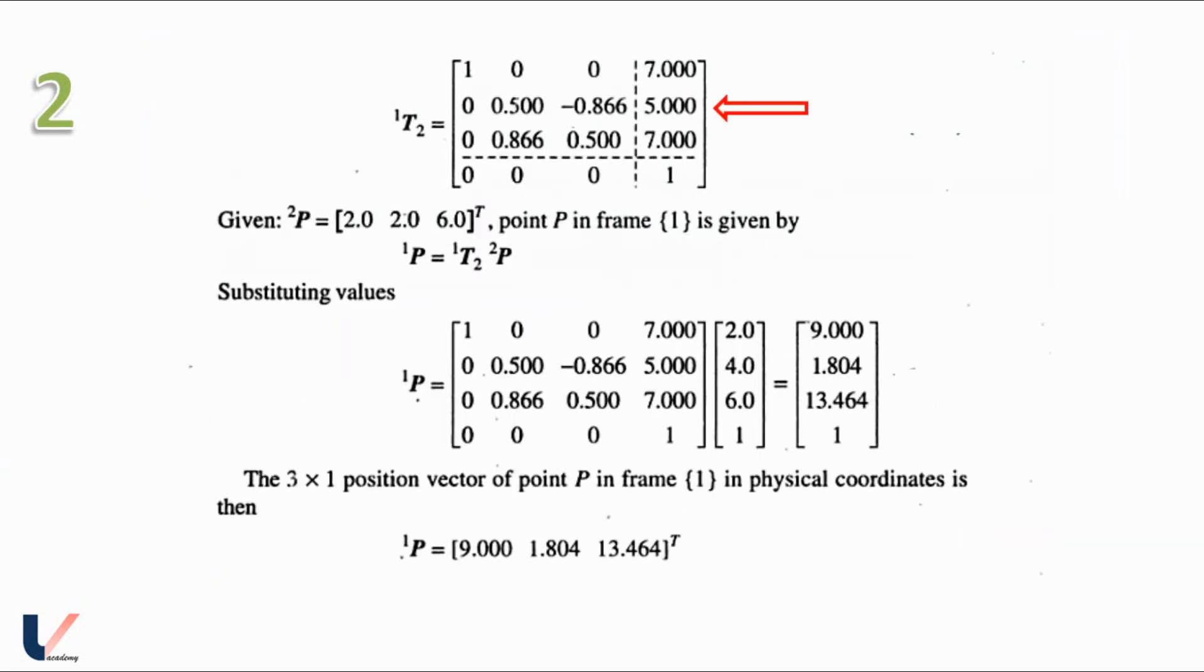We will get 1T2 as this matrix. Now it is given in the question that 2P is equal to 2, 4, 6. A point P in frame 1 to be mapped from frame 2 is given as 1P is equal to 1T2 times 2P, where 1T2 is the transformation matrix that we have already found. So substituting the values we will get 1P as matrix 1 multiplied by the matrix 2 that is 2P. Multiplying these two we will get 1P as 9, 1.804, 13.464 and 1.